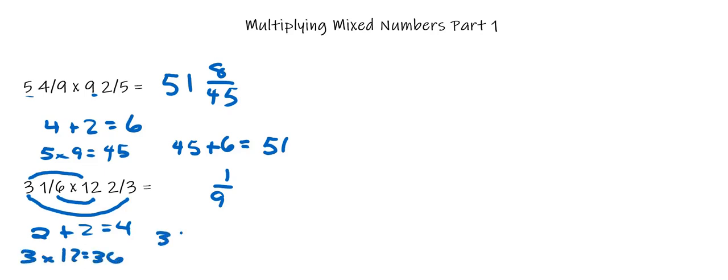And then you add back that carry. So 36 plus 4 is 40. And that's your whole number part. So 3 and 1/6 times 12 and 2/3 will give you 40 and 1/9.